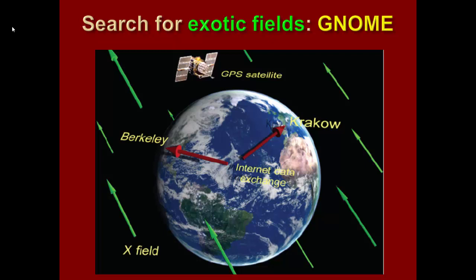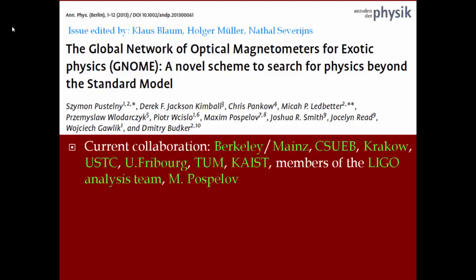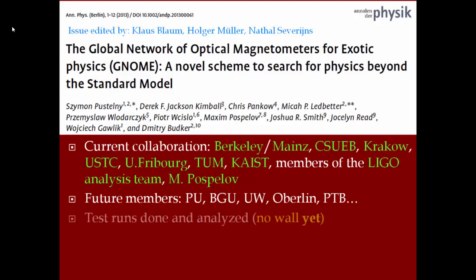And this is a picture of what we have. We have GPS timing for all the magnetometers, and they are located here. And here is the X field, as my colleague decided to call it. So we already have some preliminary results that were published in 2013 of this network. And we have a large collaboration that is growing. We have a station at Mainz, we have several stations at Berkeley, Cal State East Bay, Krakow, Poland, then China, Switzerland, and so on and so forth, Korea, and so on and so forth. So many more people want to join this network.